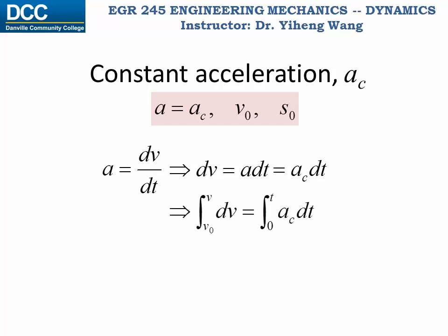Again, choose the proper integration limits. On the left side we integrate from the initial velocity v₀, and on the right side we integrate from time zero. And after integration we get v - v₀ = ac·t, and it can be rewritten as v = v₀ + ac·t.